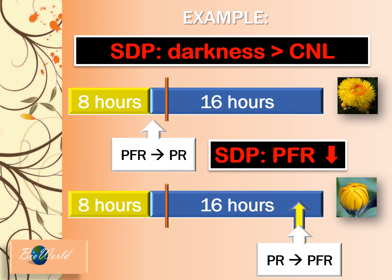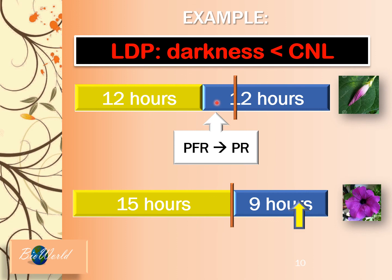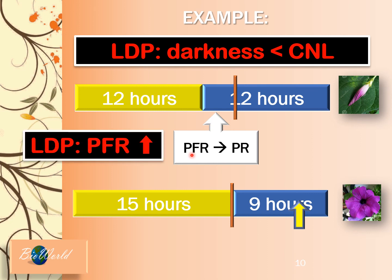Let me explain more using long-day plant examples. Here we see that the darkness is more than the critical night length, so flowering does not occur. This is because the first rule for long-day plants is the relative darkness must be less than the critical night length. In the extra darkness, phytochrome far-red will absorb the far-red light and be converted into phytochrome red. So phytochrome far-red concentration decreases, phytochrome red concentration increases. Now comes the second rule — in long-day plants, for flowering to occur, phytochrome far-red concentration must be high. But in this instance the concentration is low, so that is why flowering does not occur.